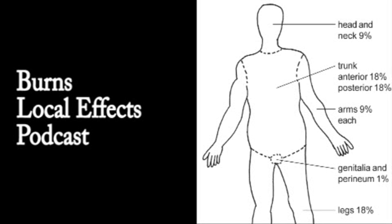Burns are classified by the depth of skin affected by the injury. The first classification are superficial burns, sometimes called epidermal burns or first degree burns. These only affect the epidermis — there is no dermal involvement. Sunburn, for example, will just affect the epidermis. Despite being superficial, these burns can be extremely painful and tender, especially if touched. There'll be a red area, but if you press on it, it will blanch readily with light pressure, because you are squeezing the blood from the intact dermal blood vessels beneath.